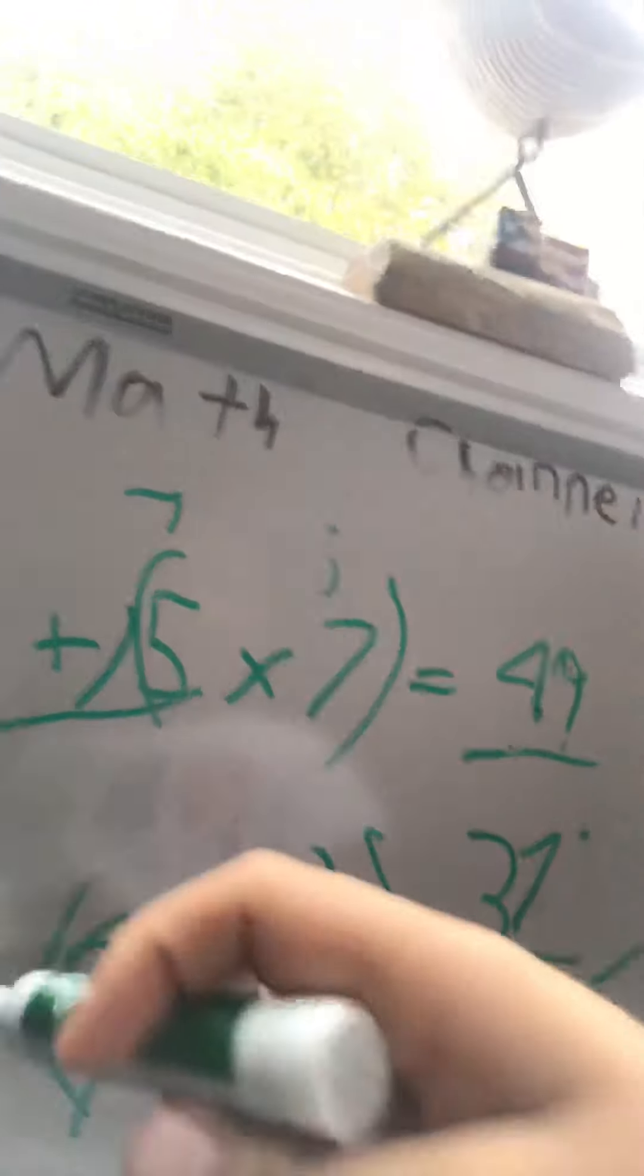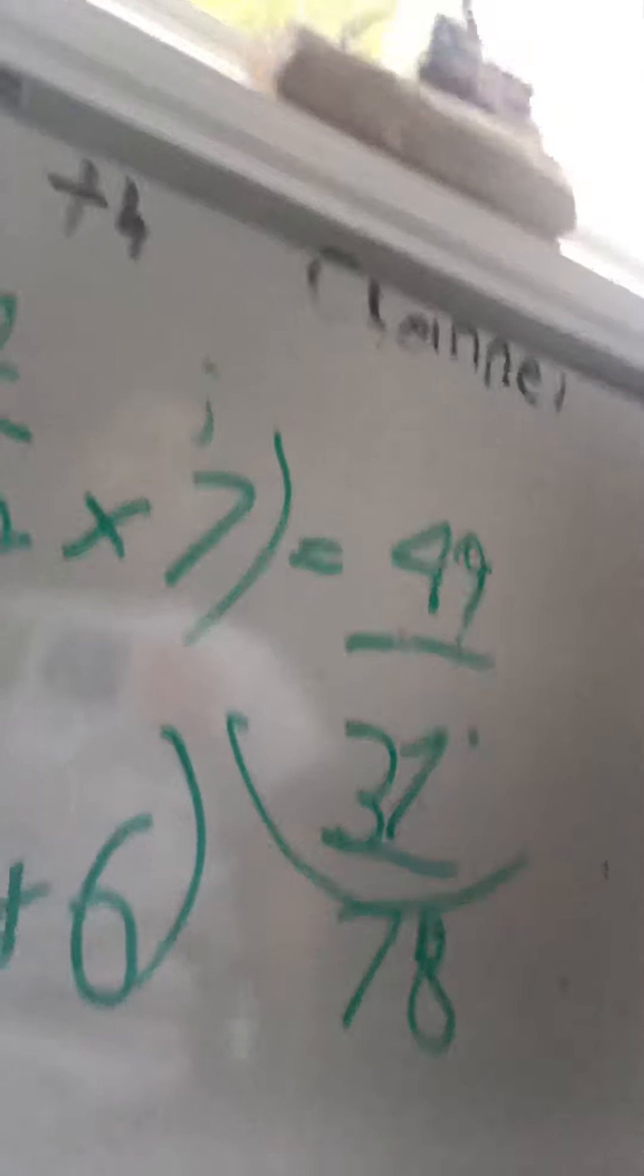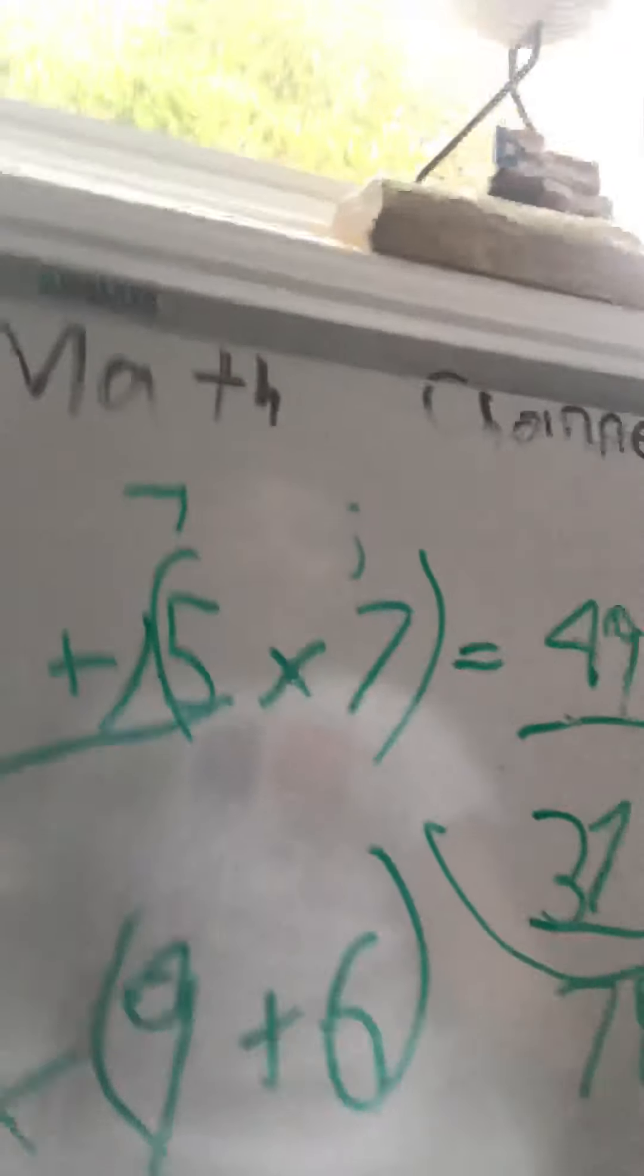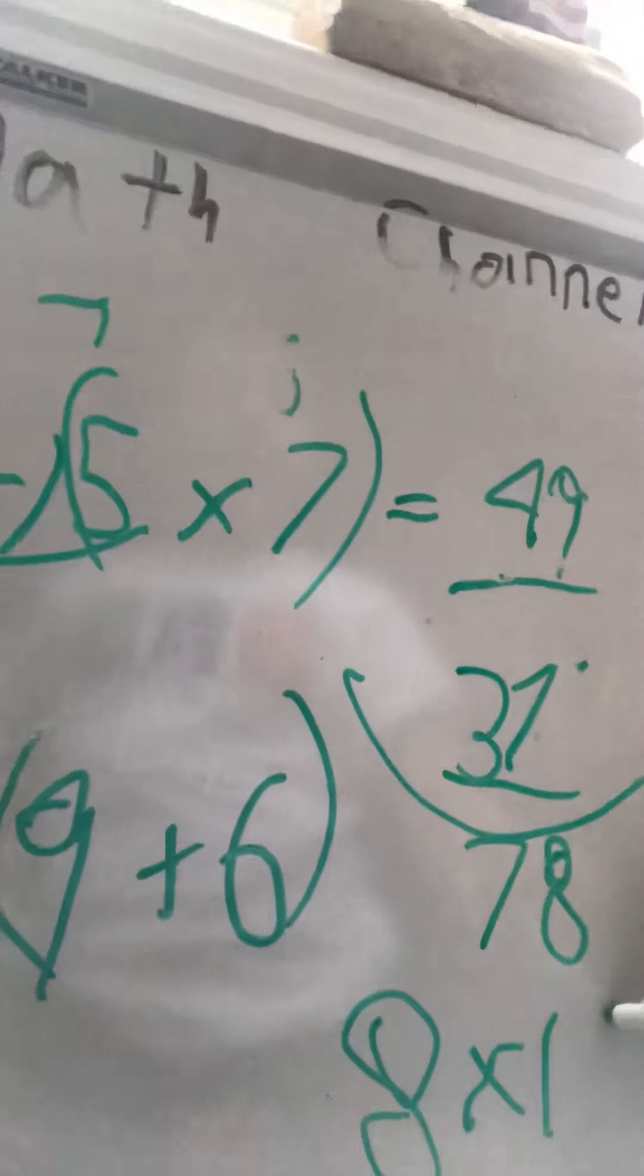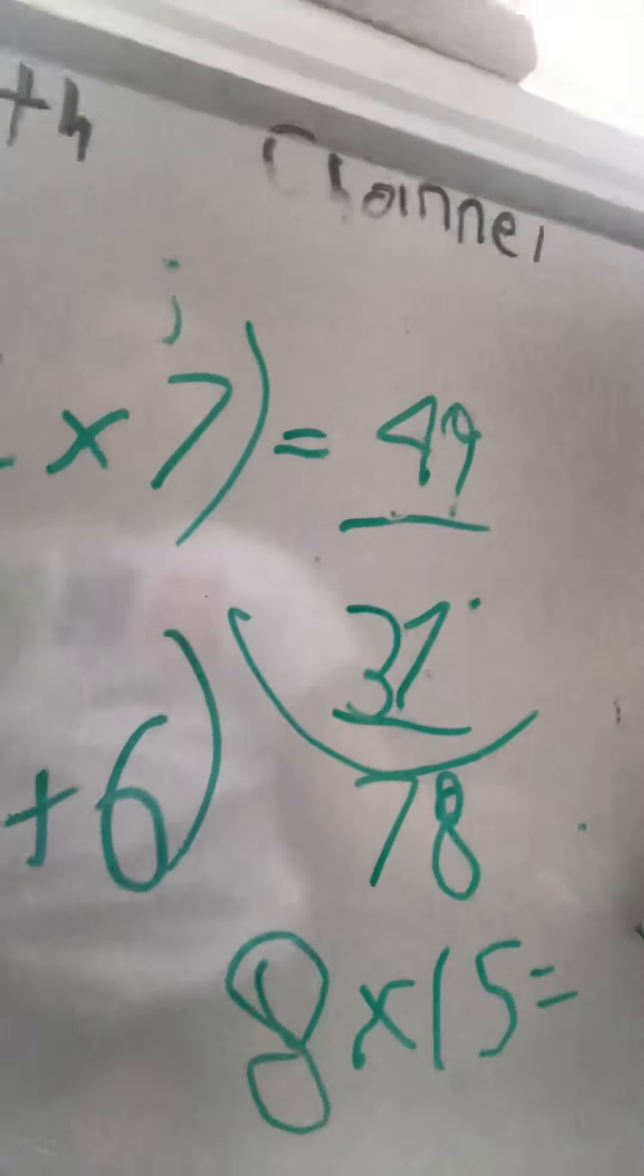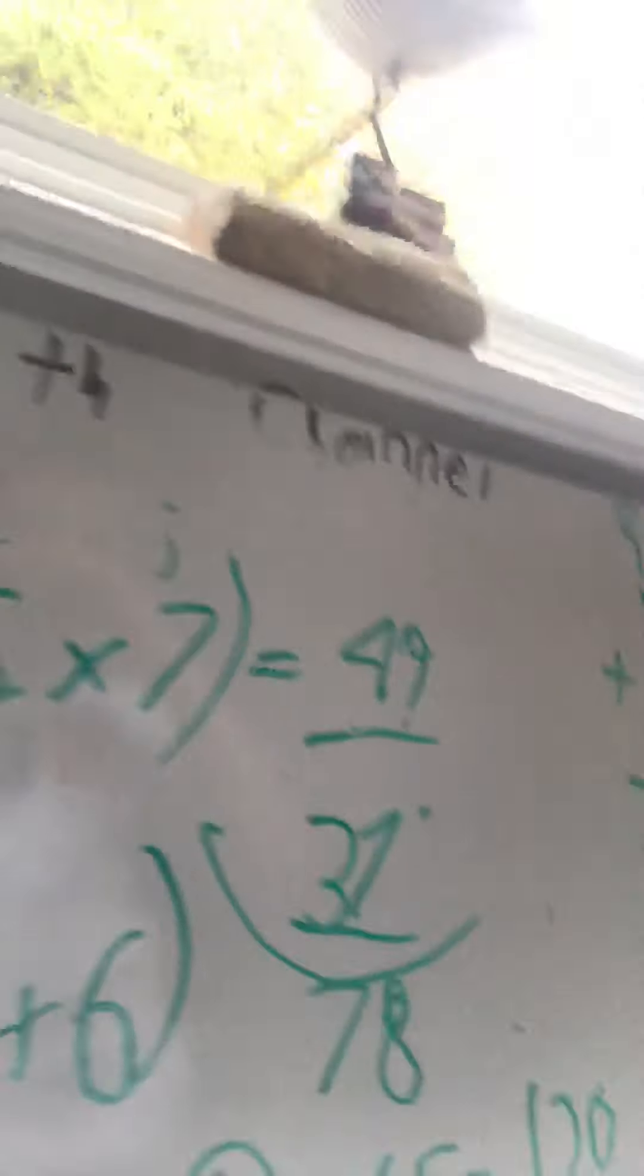And then we could either do 8 times 9 plus 6 is 15. So we could do 8 times 15 equals 120. Okay.